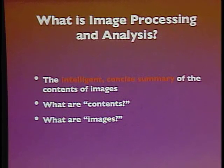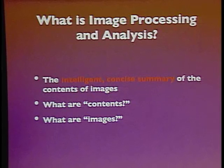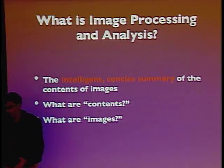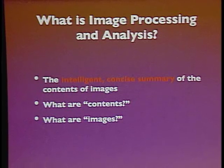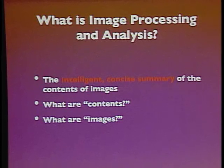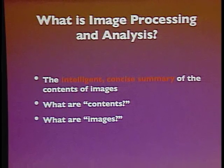To summarize, my favorite way to describe this area of study is that it's about the intelligent and concise summary of the contents of images. 'Intelligent' means moving away from pixel values — each pixel has a brightness associated with it — toward more and more semantic notions. 'Concise' means you do it in a small number of pieces of information. That begs two questions: what do I mean by 'contents,' and what do I mean by 'images'?